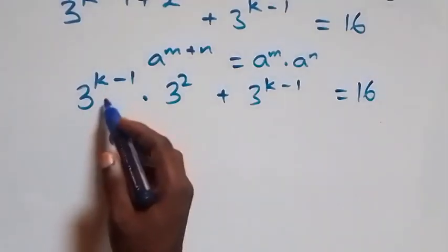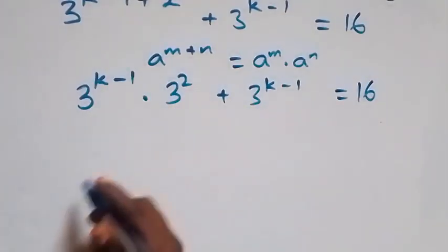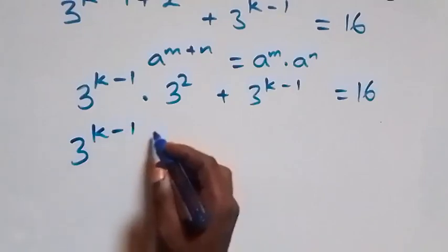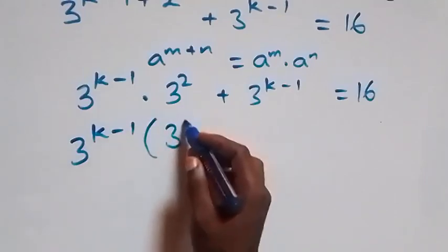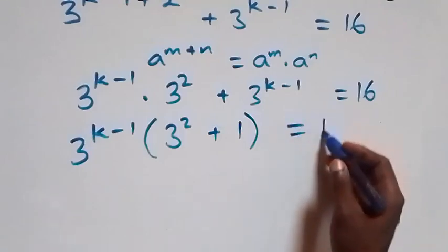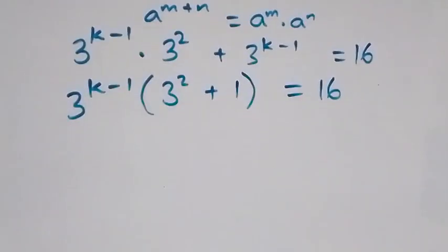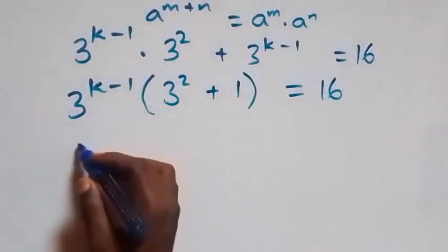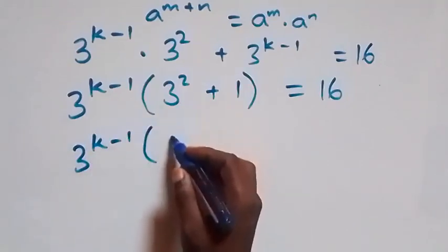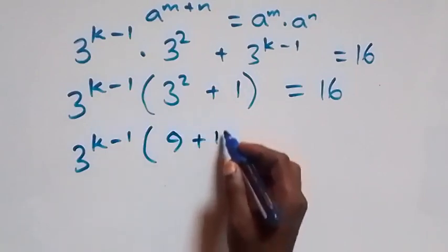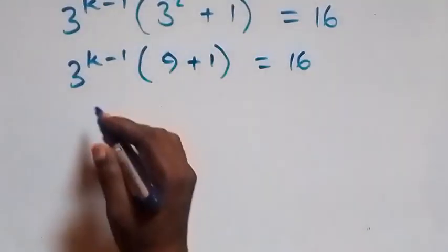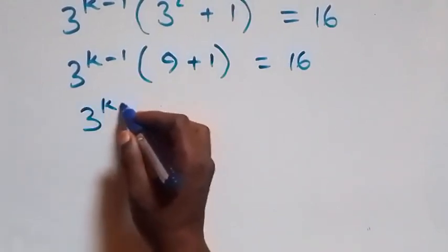From here we factor out 3 raised to power k minus 1, so this becomes 3 raised to power k minus 1 into bracket 3 squared plus 1 close bracket equals to 16. Then this becomes 3 raised to power k minus 1 times 3 squared, which is 3 times 3, that's 9, plus 1.